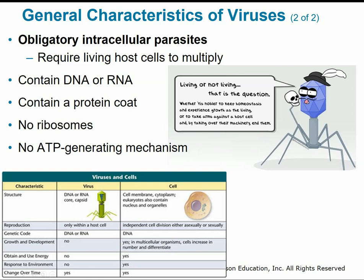Viruses are considered obligatory intracellular parasites — they require a living host cell to multiply and can't replicate on their own. They can contain DNA or RNA, but never both simultaneously. They do not have a cell membrane, but instead a simple protein coating surrounding the nucleic acid. They have no ribosomes, so they have no way to make their own proteins, and they also have no way to generate their own ATP.